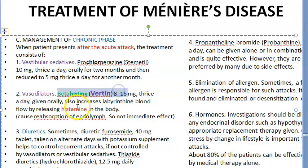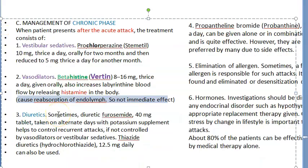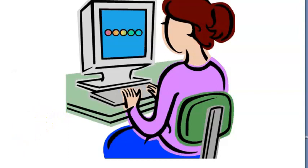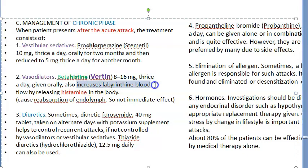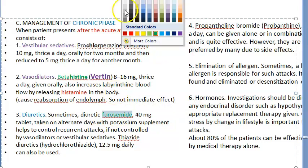The vasodilator used in the chronic phase is betahistine, also called Vertin. It increases labyrinthine blood flow by releasing histamine, causing vasodilation so endolymph gets reabsorbed — though this effect is not immediate. Also give diuretics to remove water from the body and reduce endolymph. Thiazides like hydrochlorothiazide can be used, but furosemide is preferred.